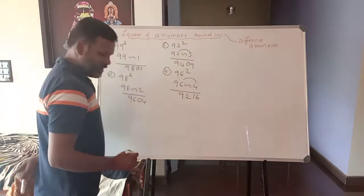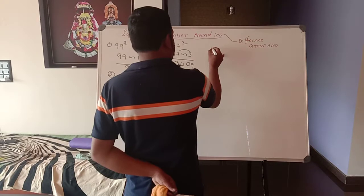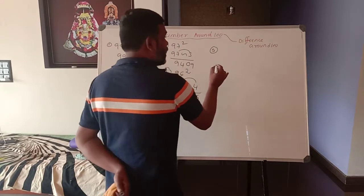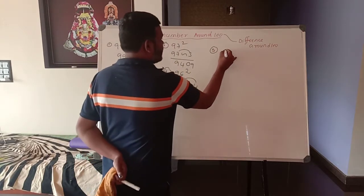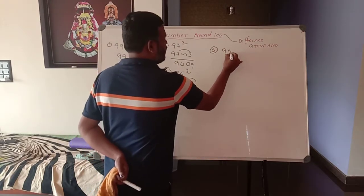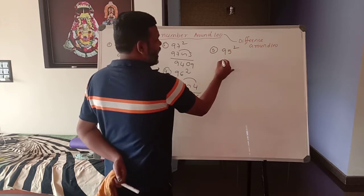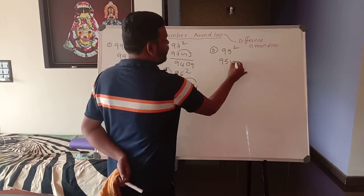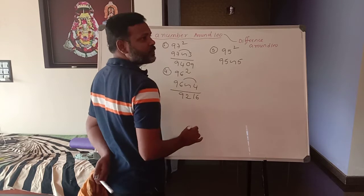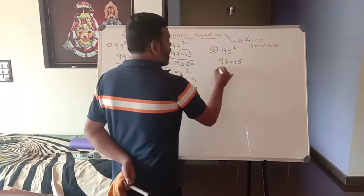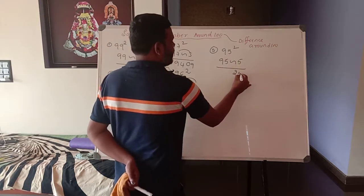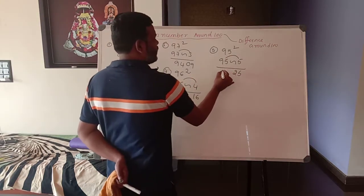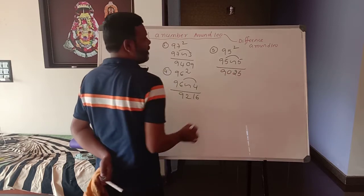Now next is the 5th one. 95 squared — 95 with a difference of 5. 5 squared is 25. 95 minus 5 is 90. So the answer is 9025.